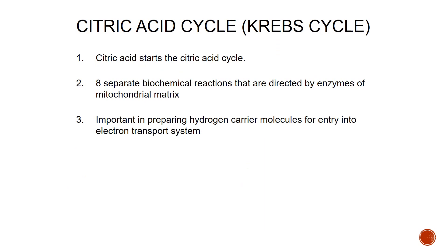Acetyl-CoA, or citric acid, then starts the citric acid cycle, also known as the Krebs cycle. This is a process where we have eight different biochemical reactions directed by enzymes within the matrix of the mitochondria. This is important because it preps the hydrogen carrier molecules to enter into the electron transport system, where we will generate the bulk of our ATP.